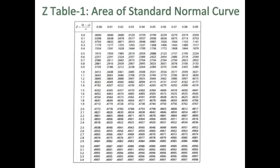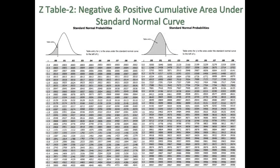Table 1 shows the area of the standard normal curve. You can use the Z table of the area of the standard normal curve to calculate p-values of the Z test. Table 2 shows the negative and positive cumulative area under the standard normal curve, which you can also use to calculate p-values of the Z test.